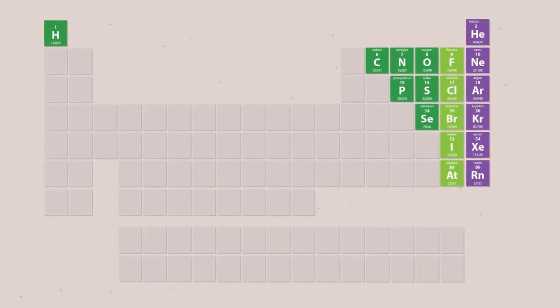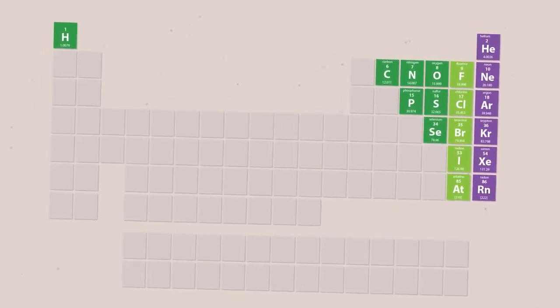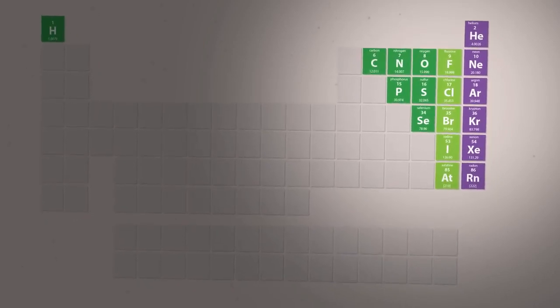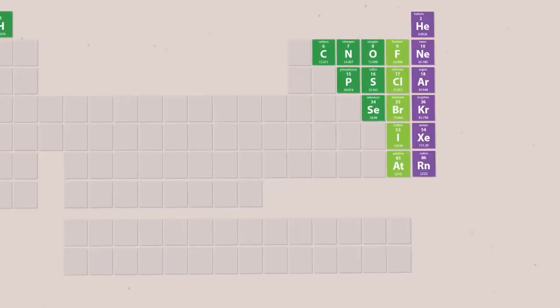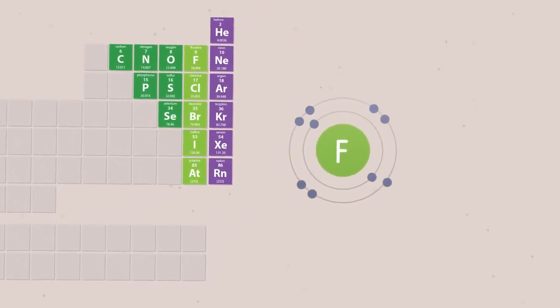Nonmetals are found on the right hand side and upper part of the periodic table. Some common nonmetals are carbon, nitrogen, oxygen and the halides.